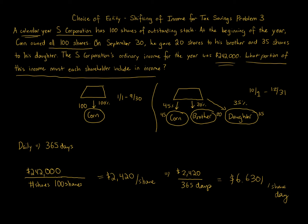Now we set up each person's calculation. Each person owns a certain number of shares, so we use that daily per-share amount. Corn's calculation will be the most complex because we'll need to add two periods together: January 1st through September 30th, and October 1st through December 31st. Let's start with brother and daughter first. There's also a shortcut subtraction method I'll show alongside the full approach.